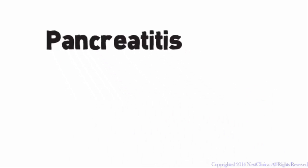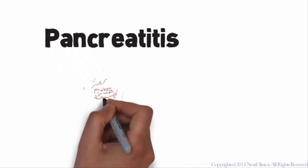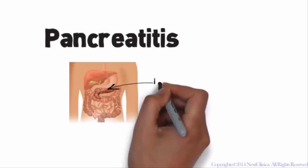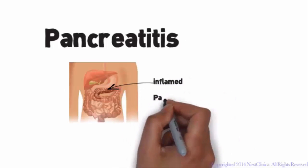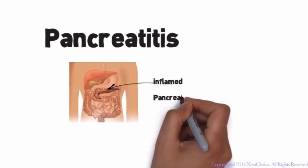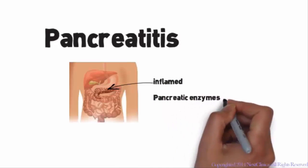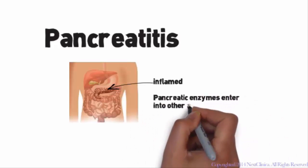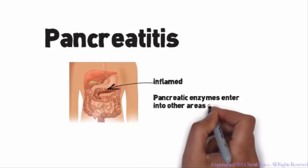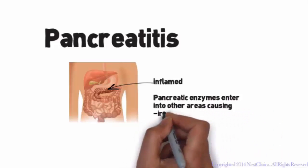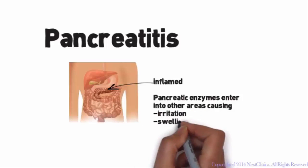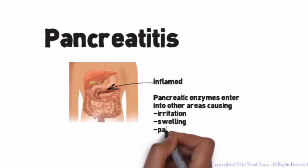Pancreatitis is a condition where the pancreas, an organ in the upper part of the abdomen, becomes inflamed. The pancreas produces hormones and contains digestive enzymes that help in breaking down food. Usually, these digestive enzymes stay in one part of the pancreas. In pancreatitis, these enzymes enter into other areas and cause irritation, swelling, and pain.